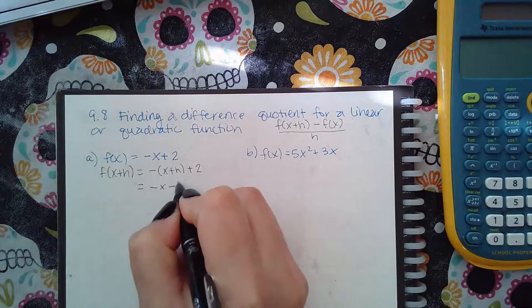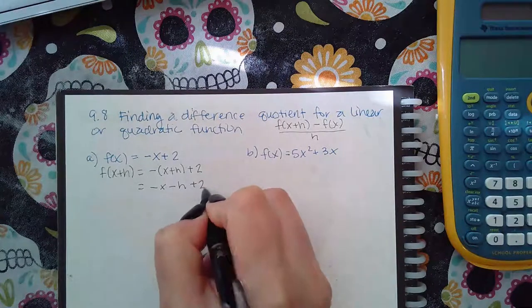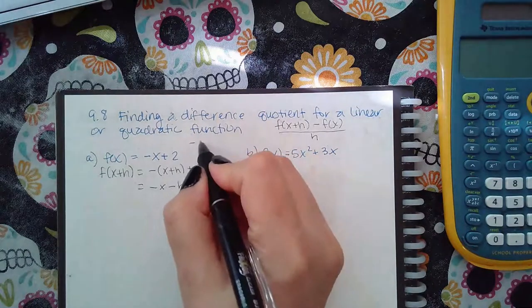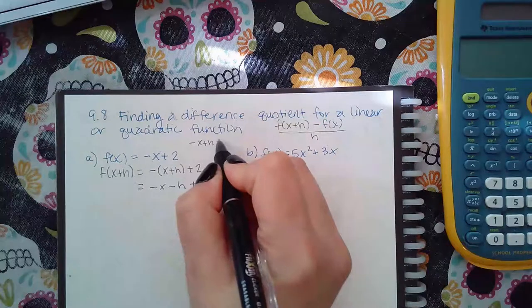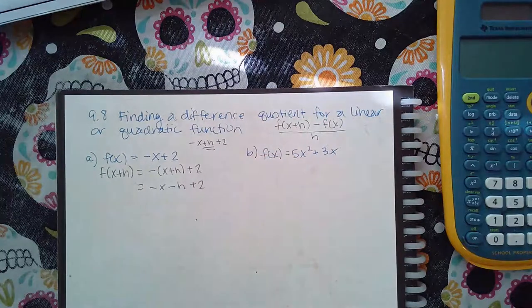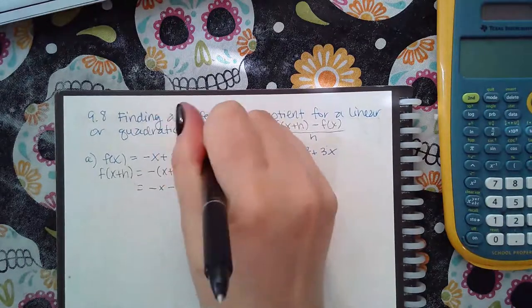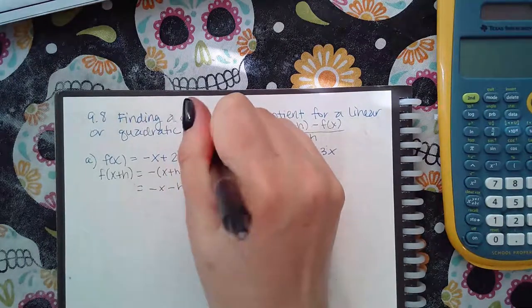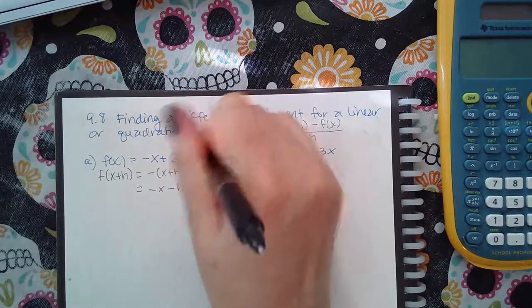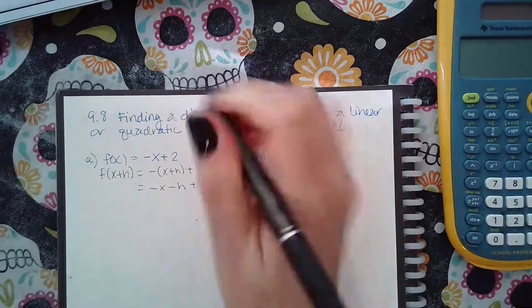So here I have negative x, negative h plus two. Whereas if I didn't use the parentheses, it would look like this. And then notice the middle term has the wrong sign, right? So it's very important that whenever you plug in the x plus h, that you do put it in parentheses.